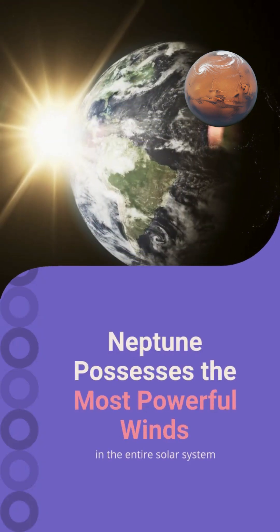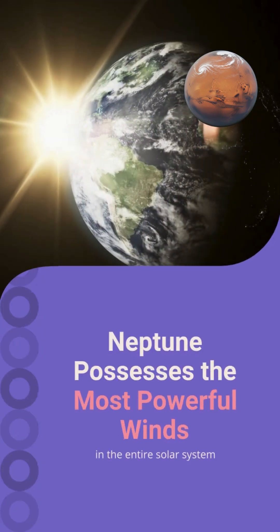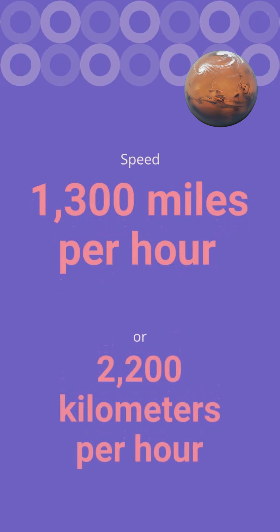Neptune possesses the most powerful winds in the entire solar system, reaching speeds of almost 1,300 miles per hour, or 2,200 kilometers per hour.